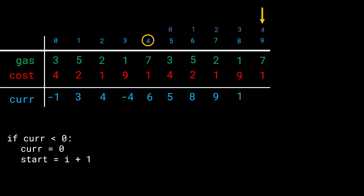We are again at station 4 — the station we started from. The condition is: if i == start + n (n = 5 here), so if 9 == 4 + 5, return start, which is 4. That matches the expected answer of 4. Just two if-statements and a loop over all values — nothing complicated, no special proofs needed.